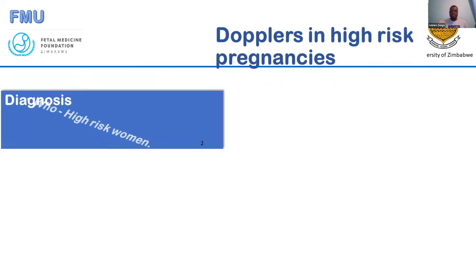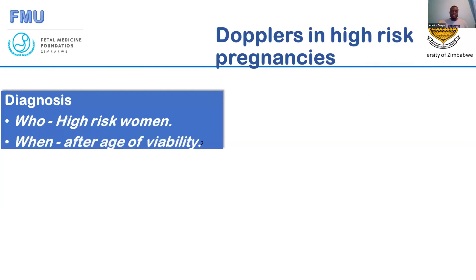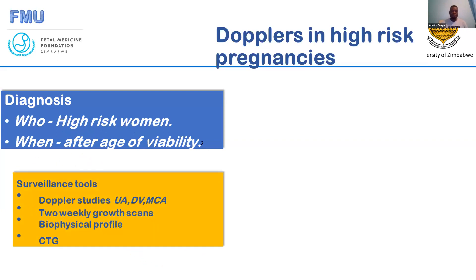In high-risk pregnancies, Dopplers play a pivotal role and are most important after the age of viability, because interventions can be made to improve the outcome of those pregnancies after the age of viability. Dopplers play a pivotal role as a surveillance tool — the umbilical artery Doppler, the MCA, the ductus venosus, two-weekly biophysical profile scans, and the fetal CTG all play an important role in the surveillance of these high-risk pregnancies.